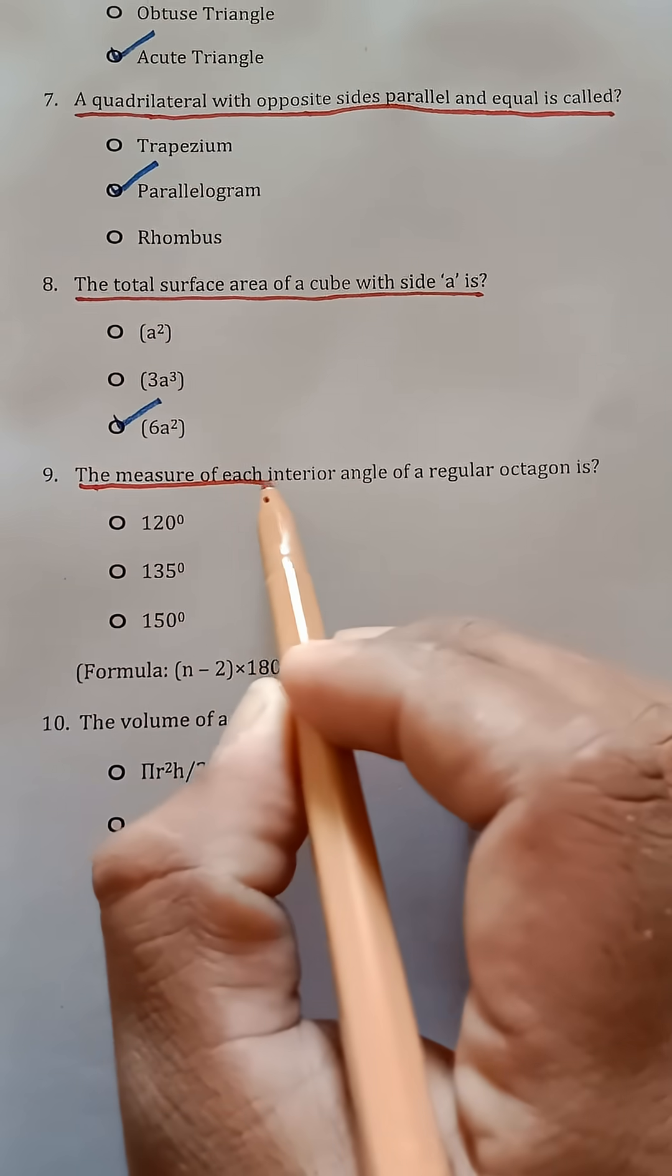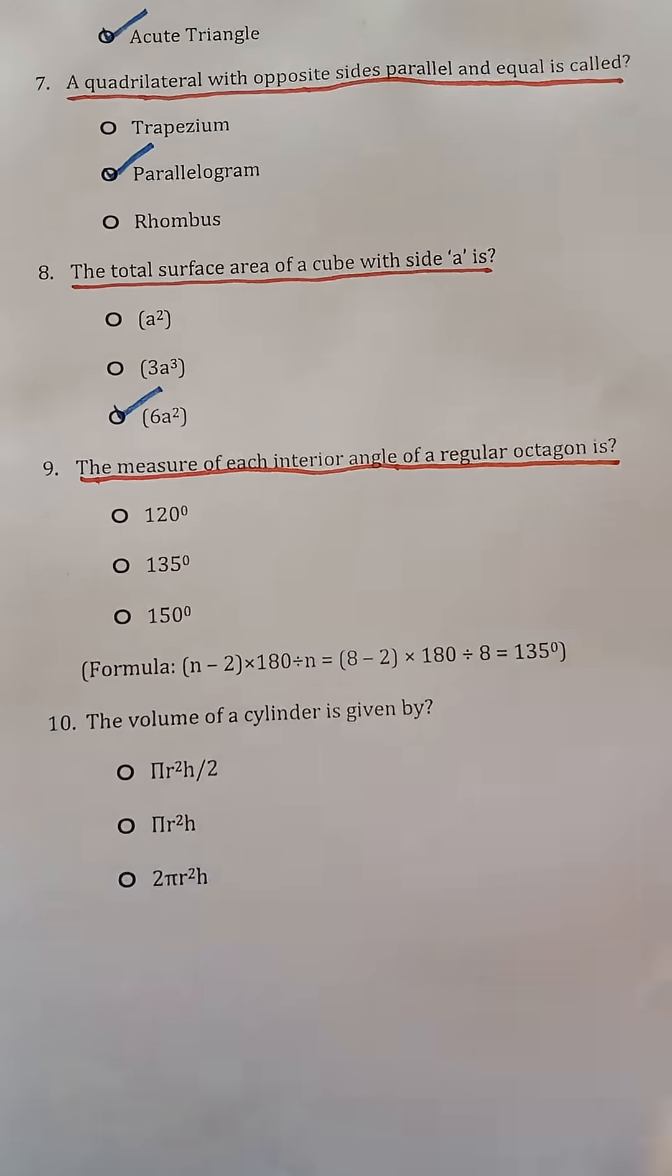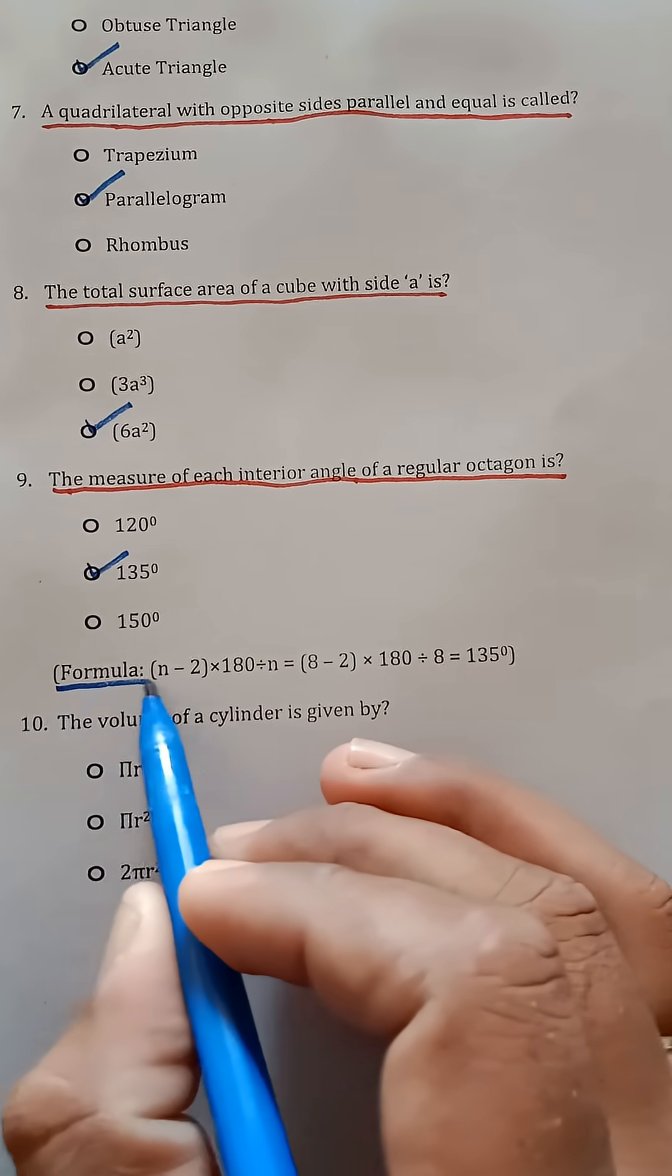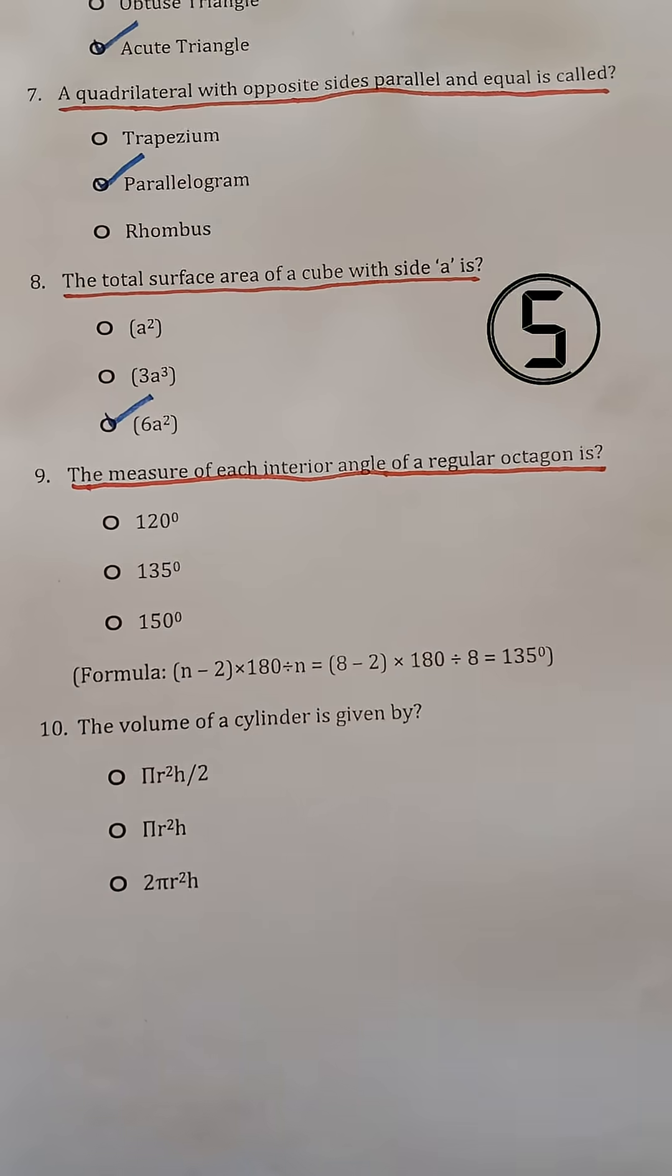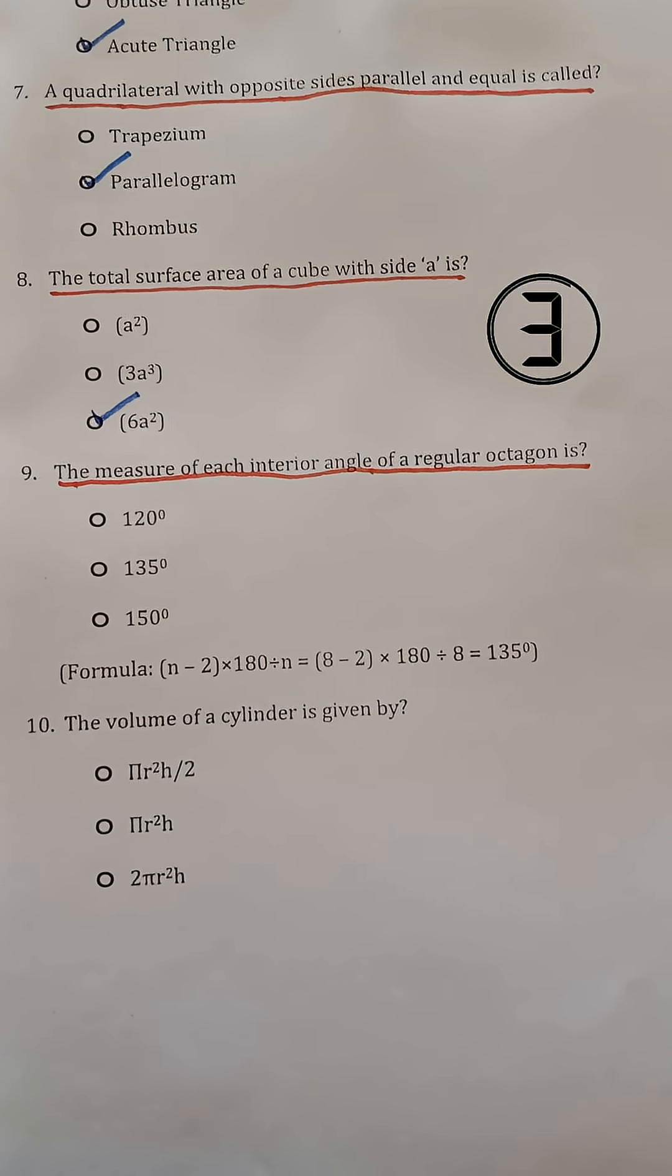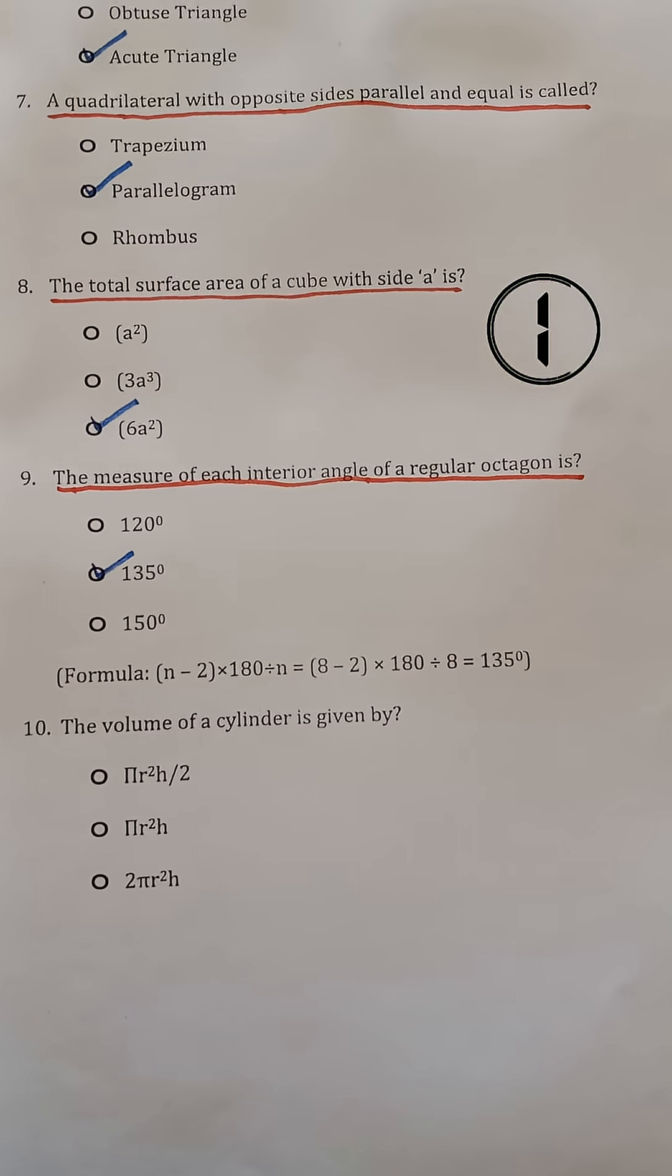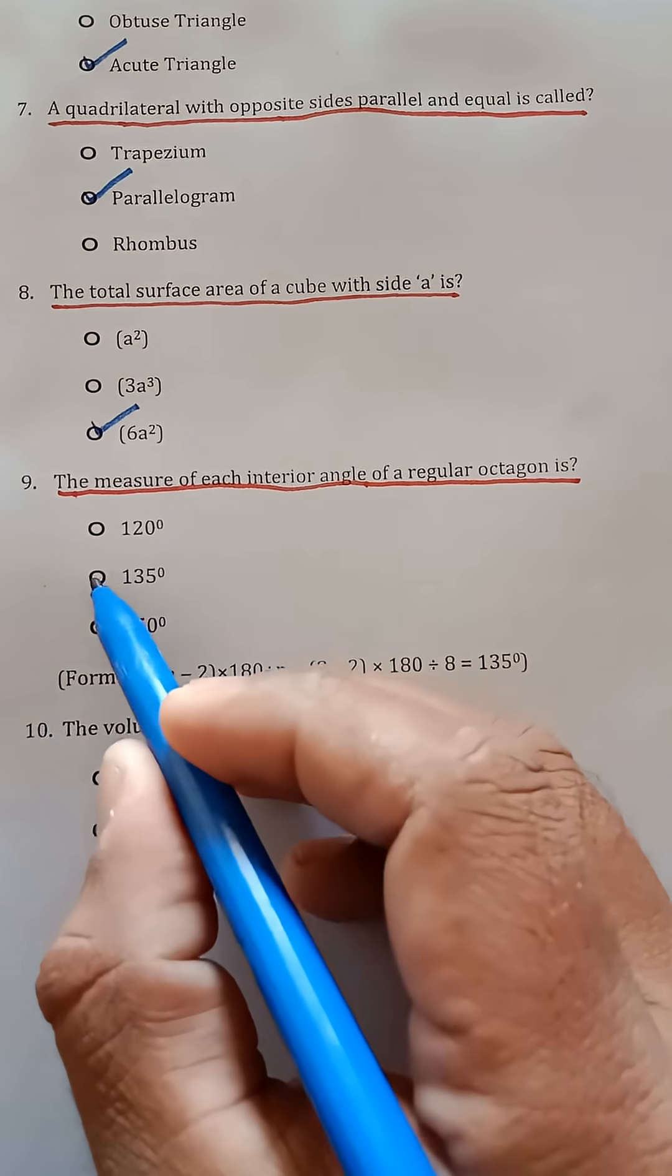Question 9. The measure of each interior angle of a regular octagon is? Formula: (n - 2) × 180° ÷ n = (8 - 2) × 180° ÷ 8 = 135°.